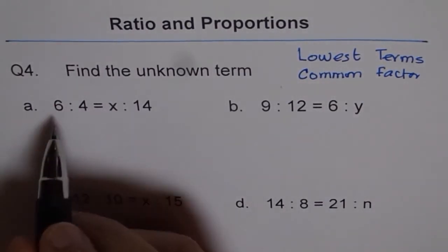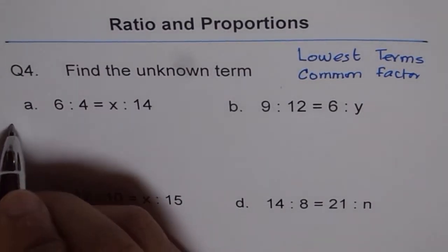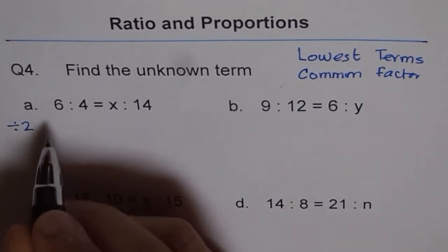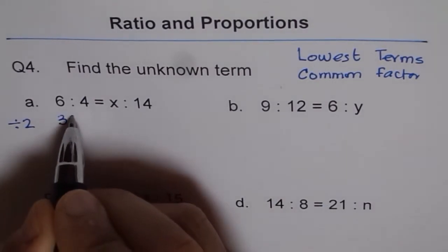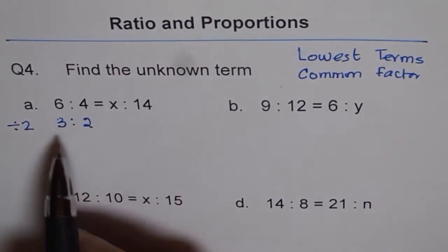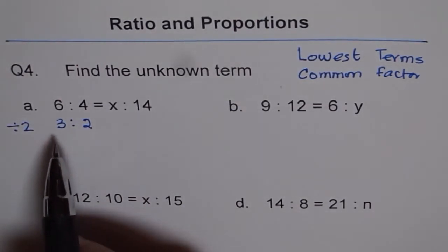So what is the common factor between 6 and 4? The common factor between 6 and 4 is 2. So let me divide both by 2. When you divide 6 by 2, you get 3. And when you divide 4 by 2, you get 2. So that is the lowest term: 3 is to 2 for 6 is to 4.